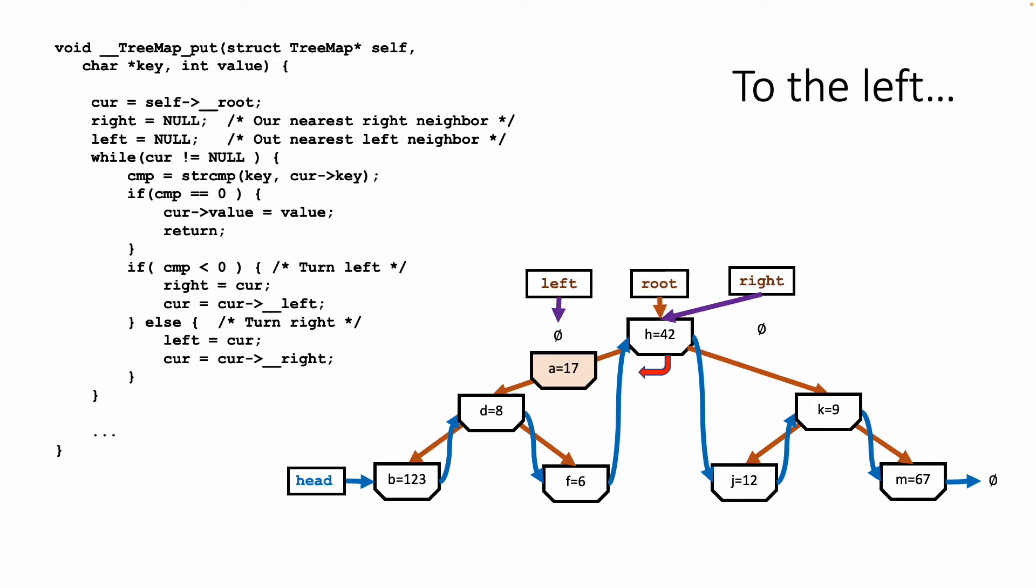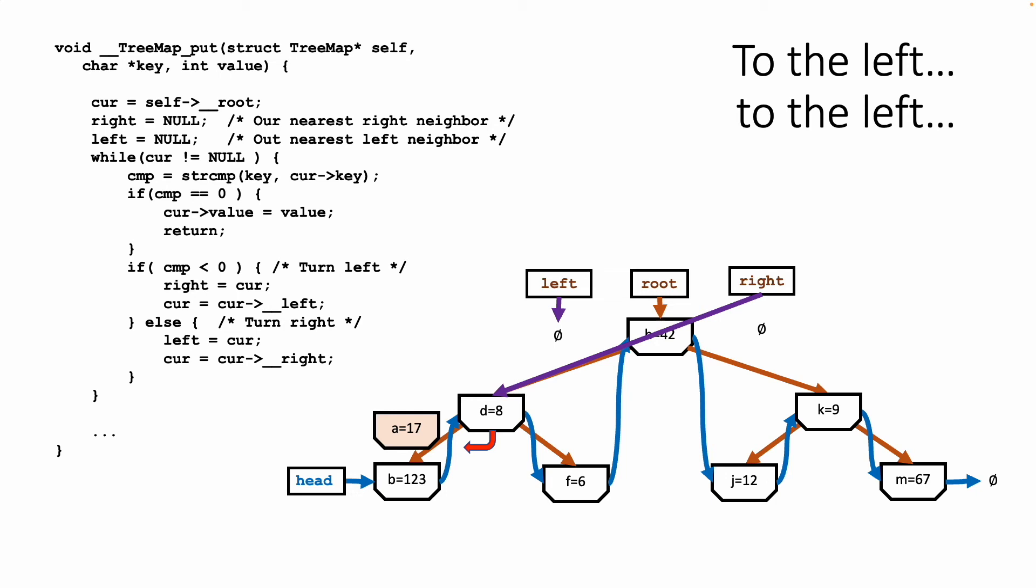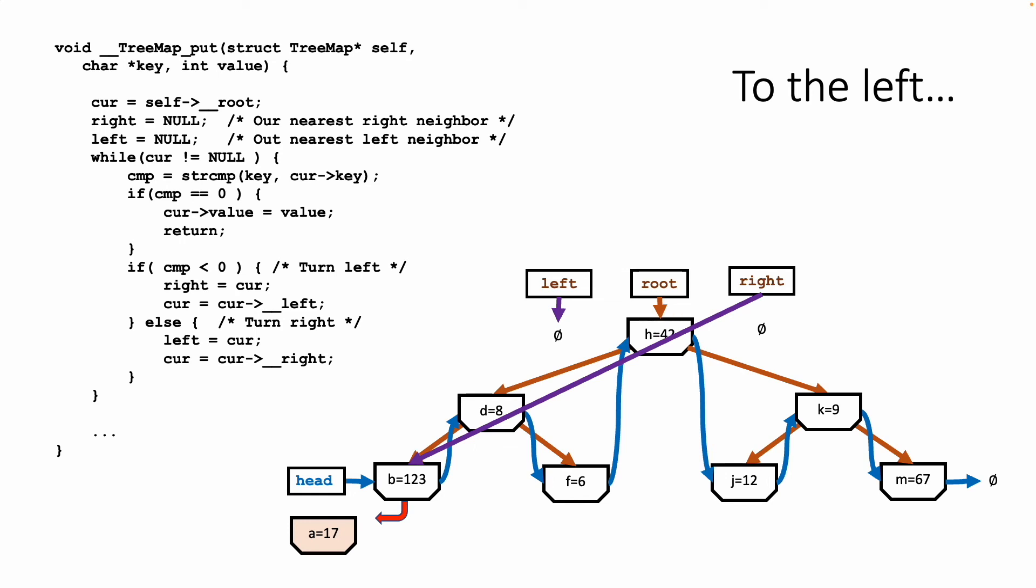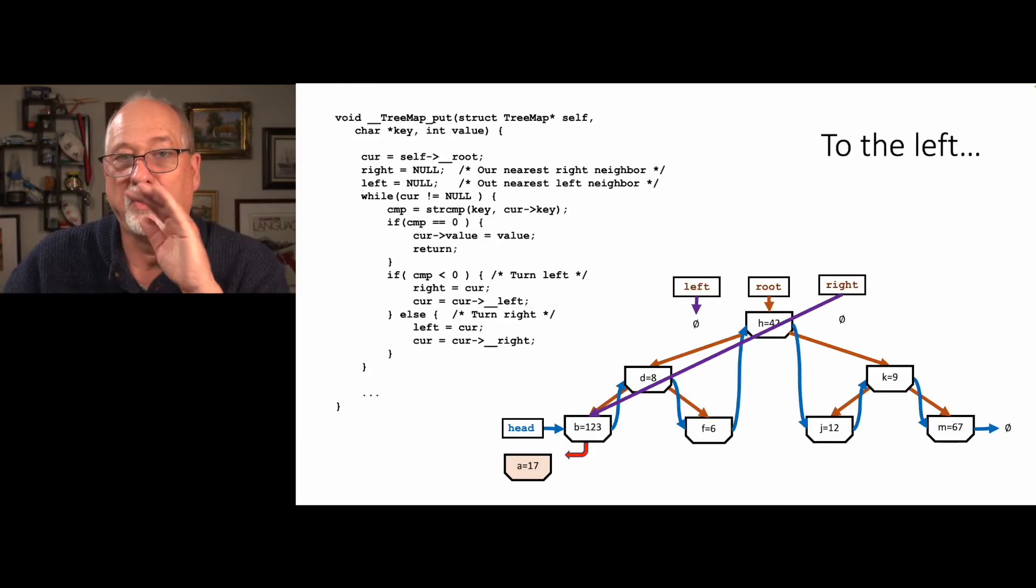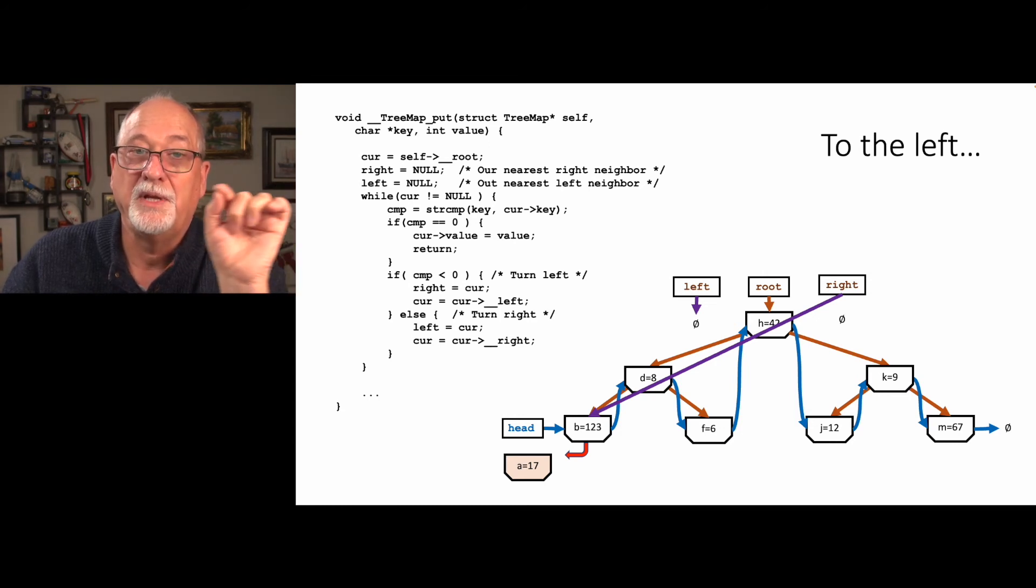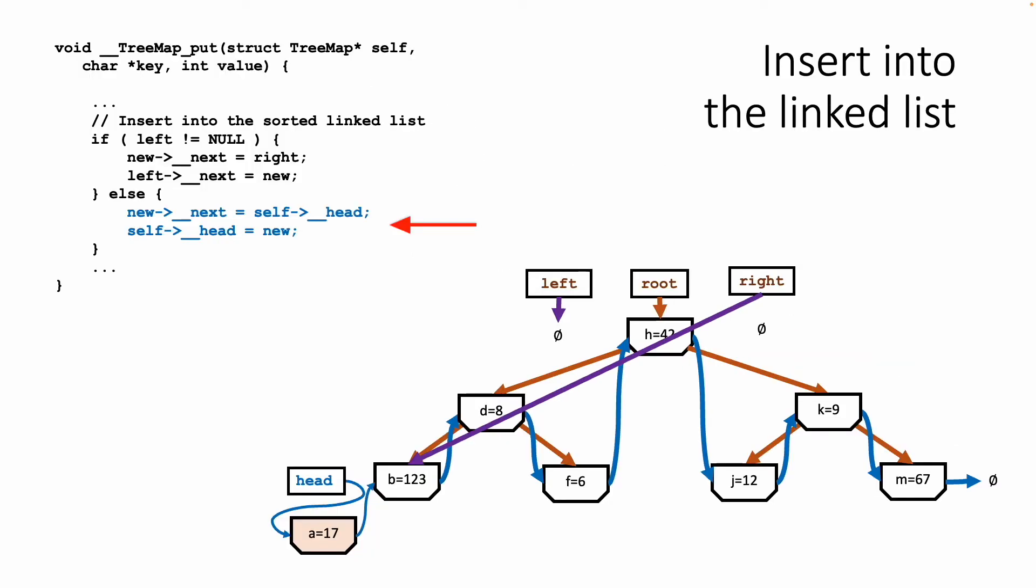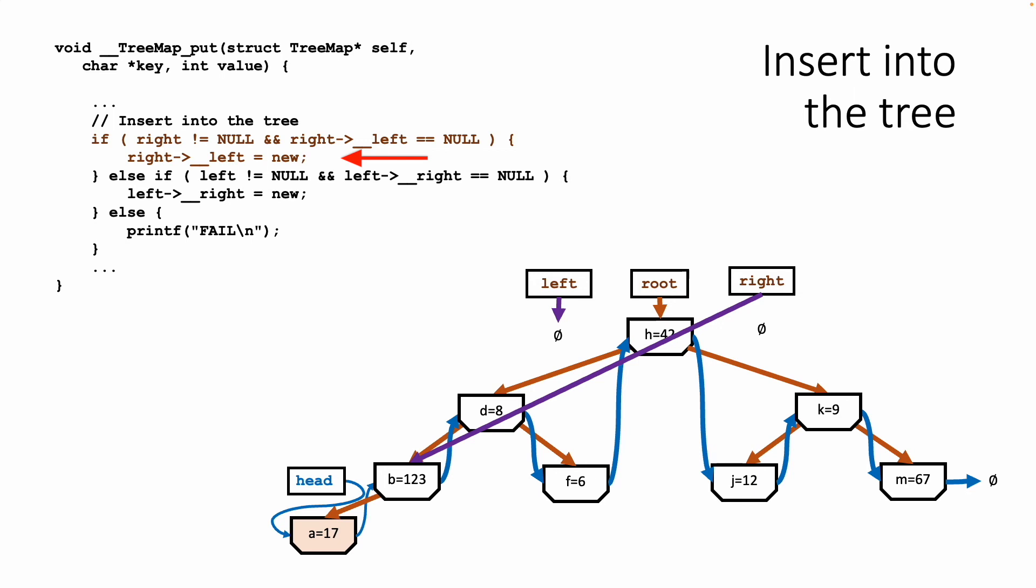The interesting thing is left is now null. We have found the place. We're going to insert to the left of b, but we're also going to insert through the head, because we know that left is null, which means that we just found the lowest thing in the current - something lower than anything in the linked list. So then we just hook a in before b, right after head, and then we hook it in to the left of the b.